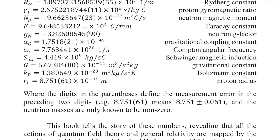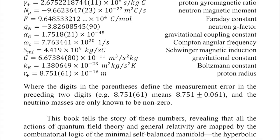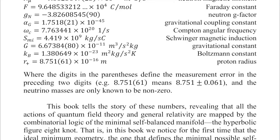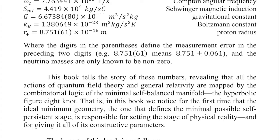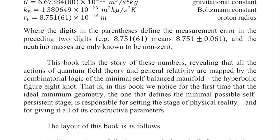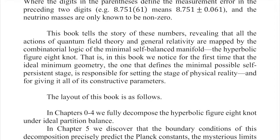Just so everyone's really centered on where we're going in this book: this book tells the story of these numbers, revealing that all the actions of quantum field theory and general relativity are mapped by the combinatorial logic of the minimal self-balance manifold, the hyperbolic figure-eight knot. In this book, we notice for the first time that the ideal minimum geometry — the one that defines the minimum possible self-persistent stage — is responsible for setting the stage of physical reality and for giving it all of its constructive parameters.